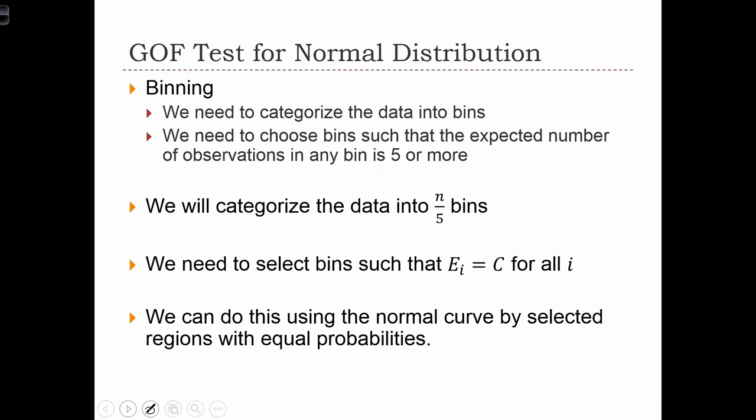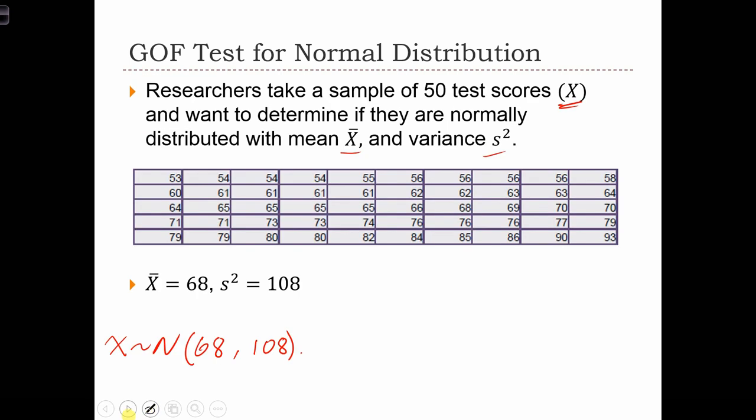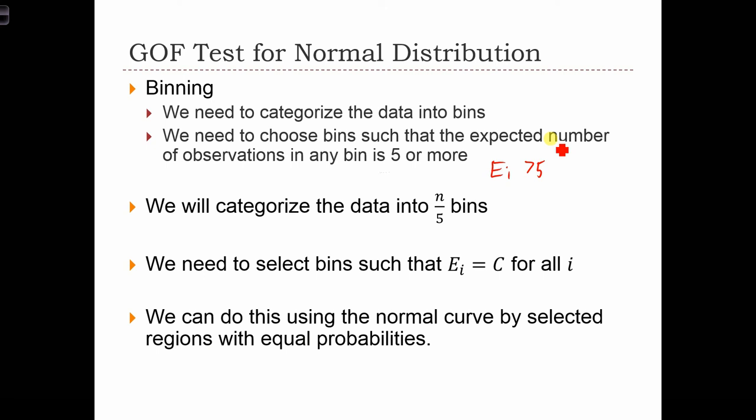That E sub i is greater than 5 for all i. So in order to guarantee that we have at least 5 observations in each bin, we're going to divide n, the number of observations, by 5 to compute how many bins we need to have. So in this case, we had 50 test scores, so 50 over 5 equals 10. So if we group the data into 10 bins, we can do it in a way that guarantees that we have at least 5 observations in each bin, or 5 expected observations in each bin.